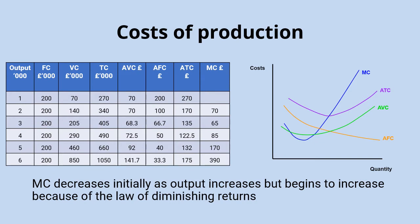Looking next at the marginal cost curve — remember, marginal cost is the additional cost of producing one extra unit of output. The marginal cost curve usually comes in this tick shape. At very low levels of output, increasing the quantity produced is generally quite easy and can often be done more efficiently. Imagine you're running a bakery: the additional cost of producing your sixth, seventh, or eighth cake is very likely lower than producing your first or second. You might get some benefits from specialisation and division of labour as you add your first or second worker.